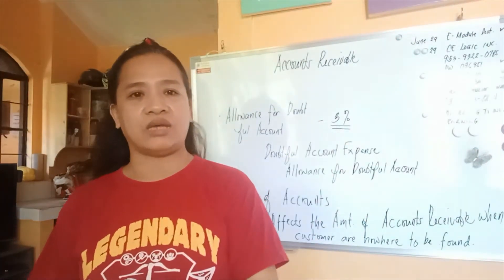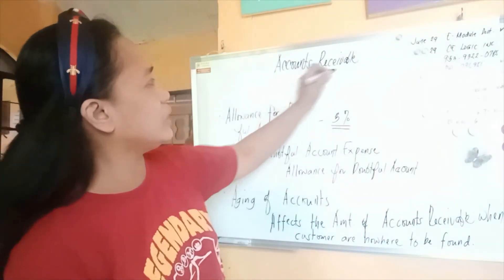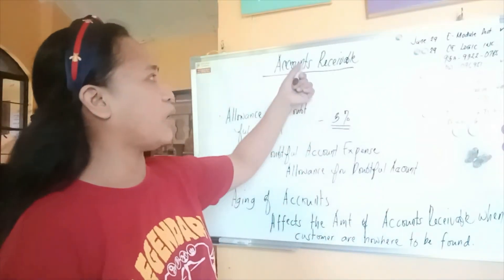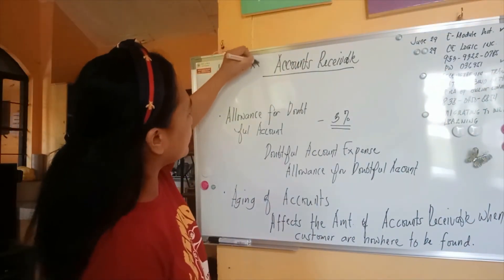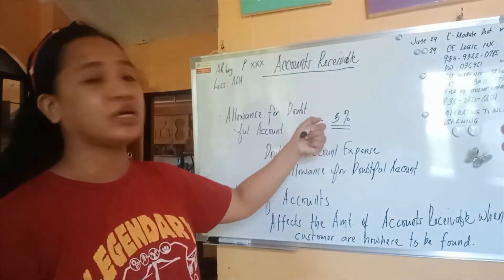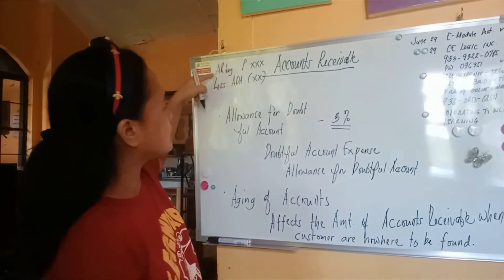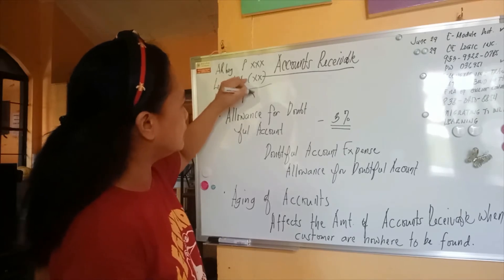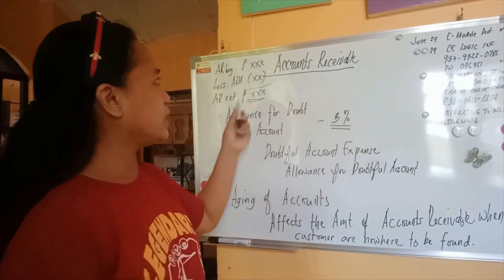At the end of the year, if you cannot collect certain items, at least you have a certain portion of allowance for doubtful accounts. We need to arrive at a net accounts receivable. For example, at the end of the period, you still have accounts receivable — you record accounts receivable beginning, deduct the allowance for doubtful accounts already recorded in your journal, and what you will see on the balance sheet will be the accounts receivable end. We will discuss this further in the analysis of accounts receivable.